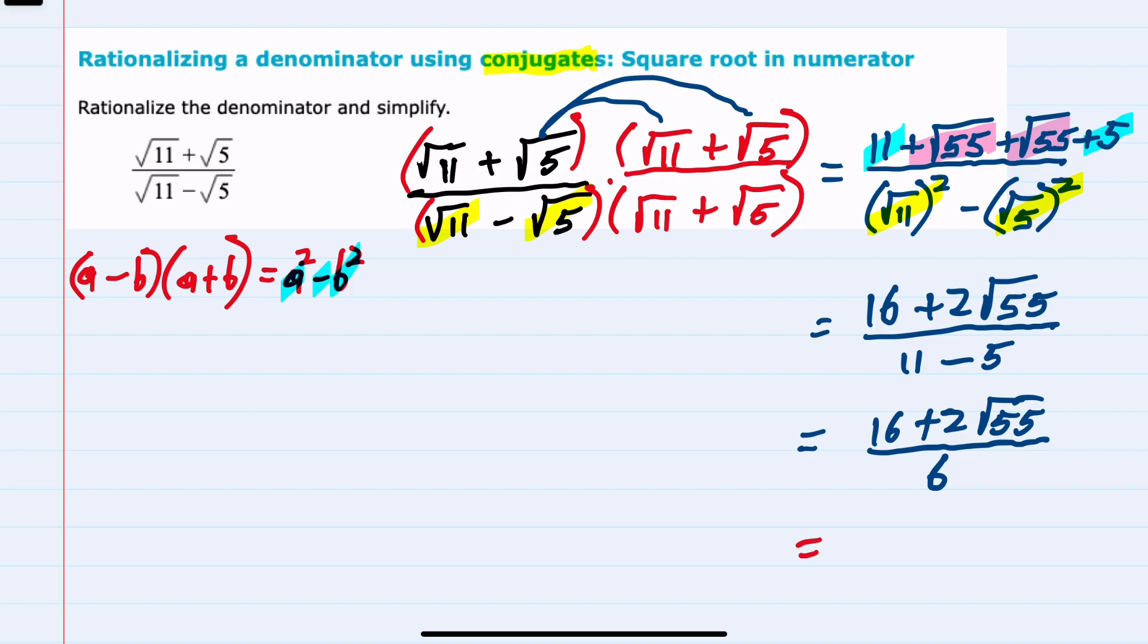But to show that, it's helpful when I have multiple terms to factor out what I will ultimately be canceling. So in the numerator, I can factor out a 2, and I'm left with an 8 from the 16. And factoring out a 2, I would just have the square root of 55.